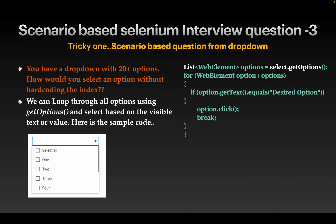Next question: you have a dropdown with 20-plus options — how would you select an option without hard-coding the index? You cannot hard-code an index value. Use a list and get all options using the getOptions() method. From the list of web elements, loop through all elements and use the equals() method to match the text you want to click. You can select based on visible text or value, since you cannot use index.